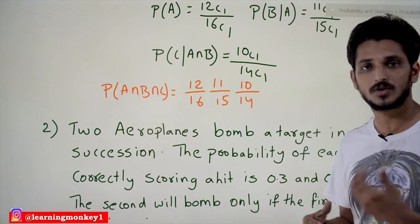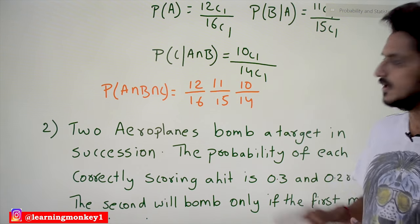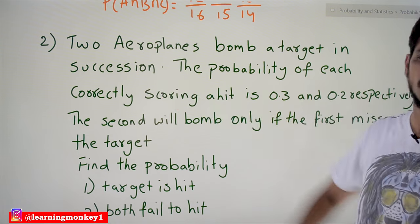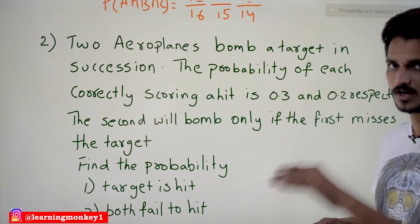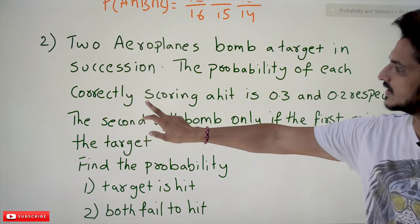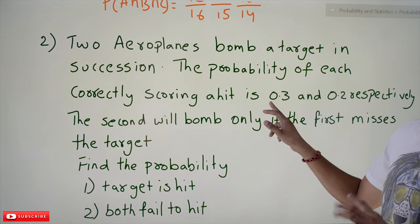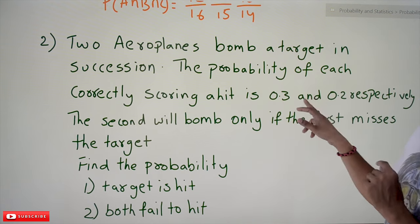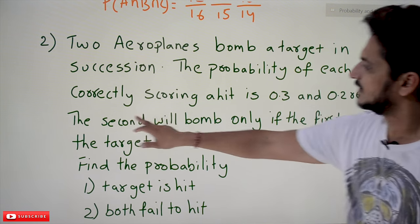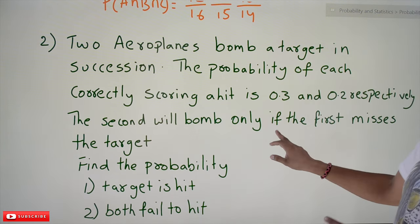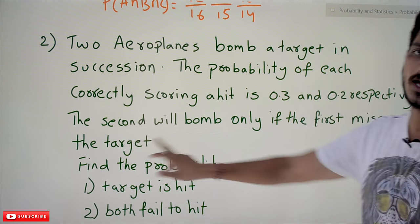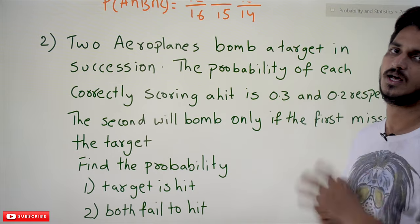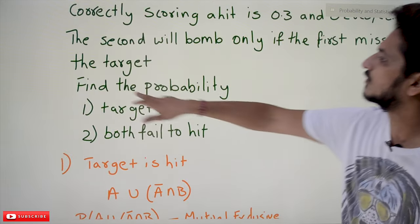Coming to the second question: two airplanes bomb a target in succession — one after the other. The probability of each correctly scoring a hit is 0.3 and 0.2 respectively. The second will bomb only if the first misses the target.